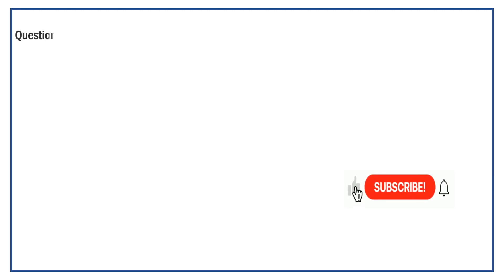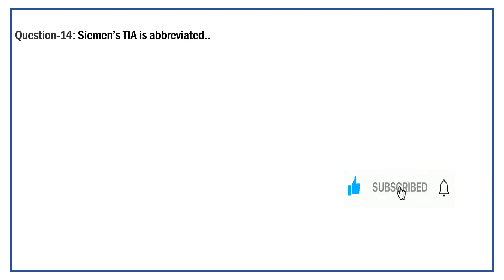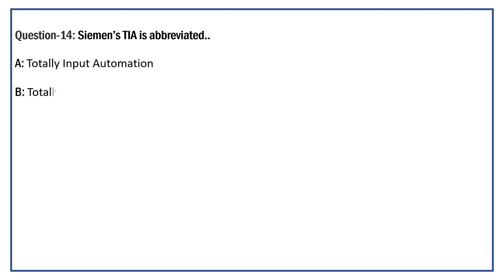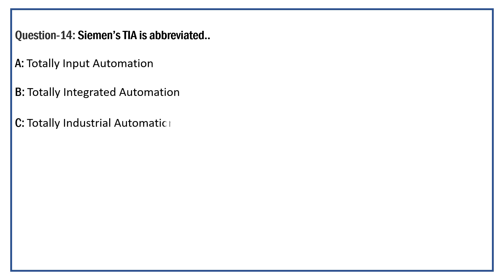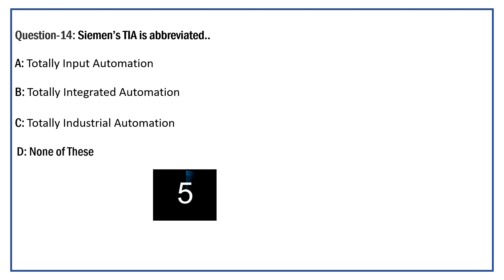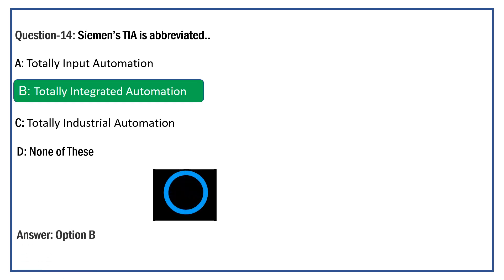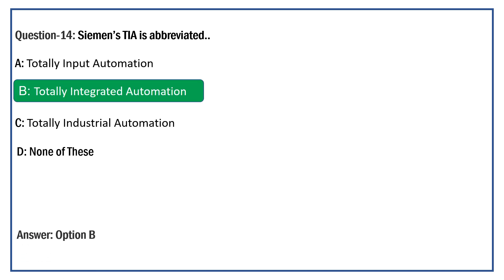What is the full form of Siemens TIA Portal? Option A: Total Input-Output Automation. Option B: Totally Integrated Automation. Option C: Totally Industrial Automation. Option D: None of the Above. The right answer is Option B: Totally Integrated Automation.